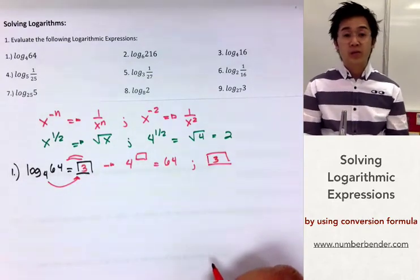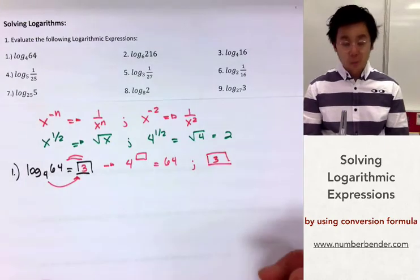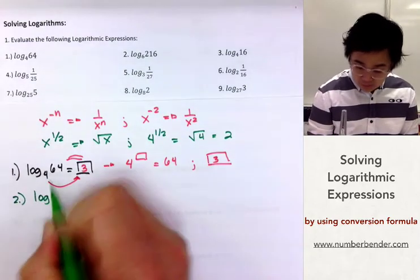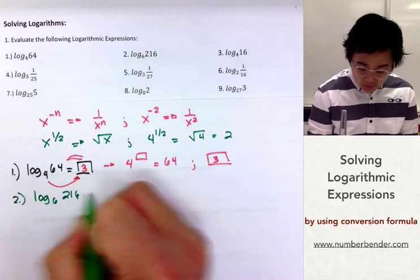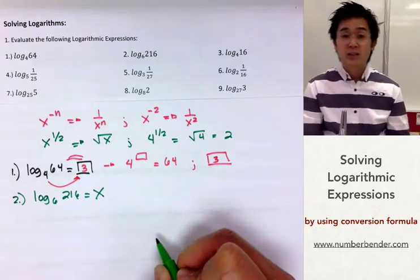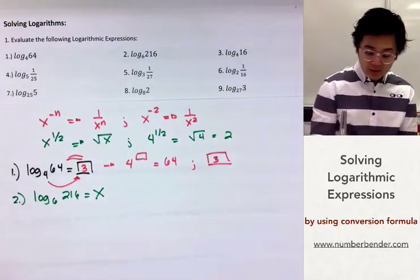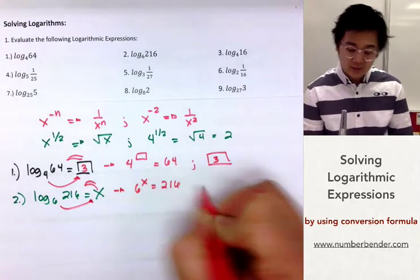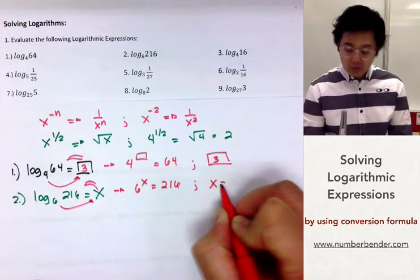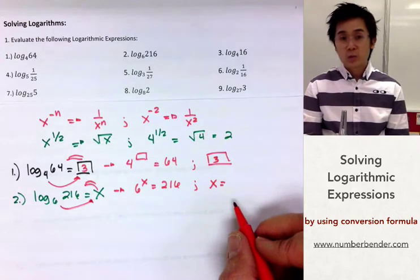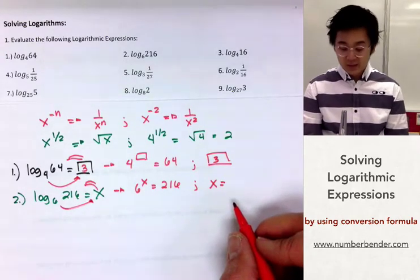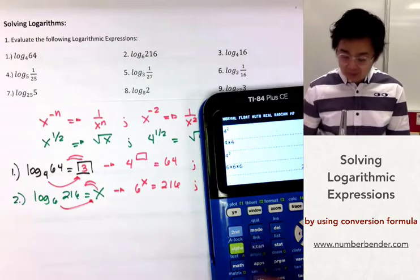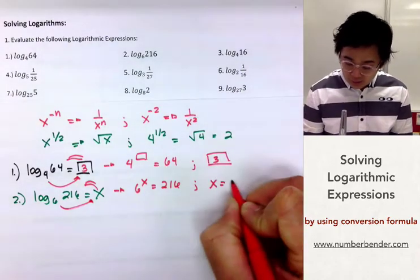That is how we solve logarithms using exponents. For problem number 2, logarithm of 216 base 6 equals x. Converting to exponential gives us 6 raised to x equal to 216. The exponent cannot be 2 because 6 squared is 36. But 6 times 6 times 6 — which is 6 raised to 3 — equals 216. So the exponent we're looking for is also 3.